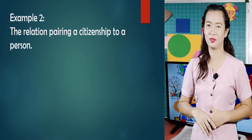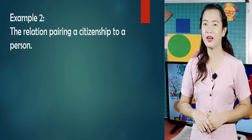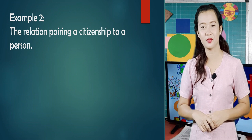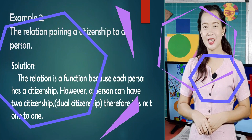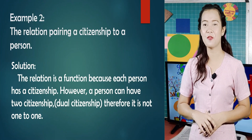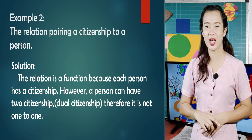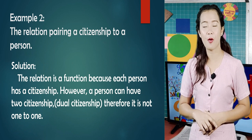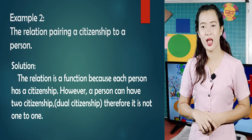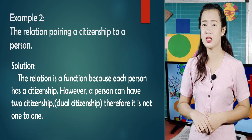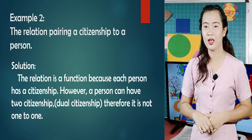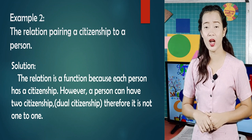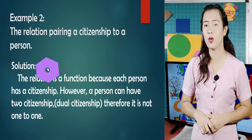Example 2: The relation pairing a citizenship to a person. The relation is a function; however, a person can have dual citizenship. Therefore, it is not a one-to-one function.